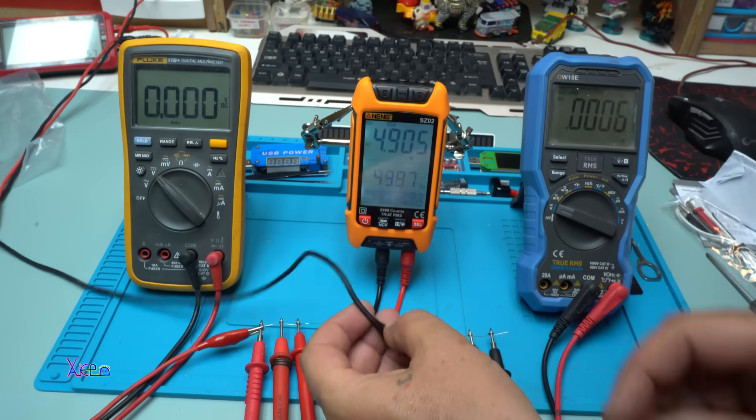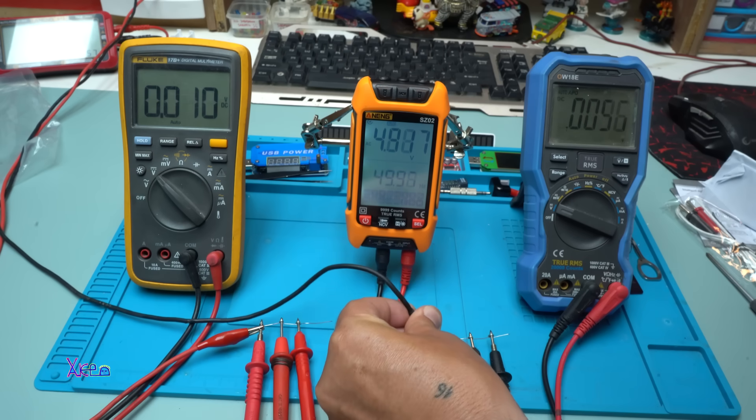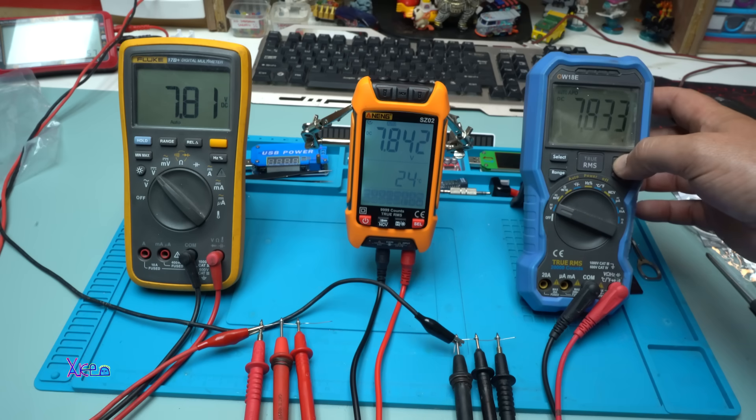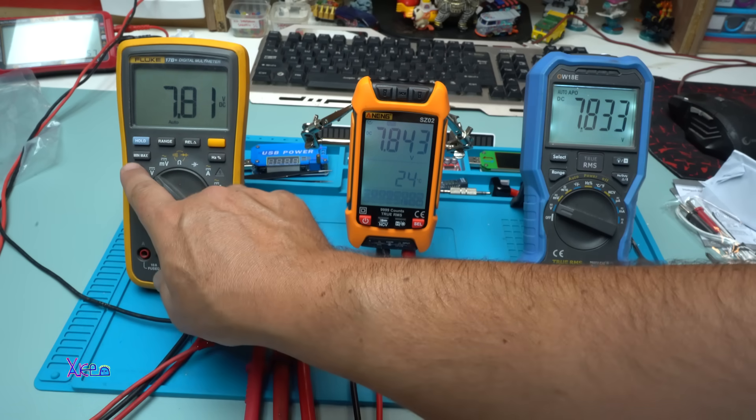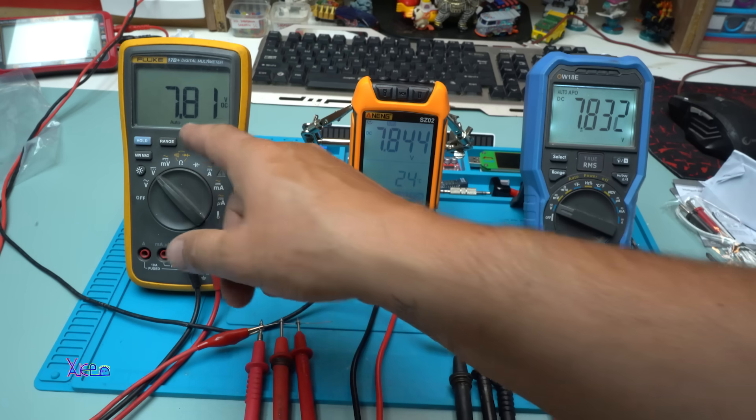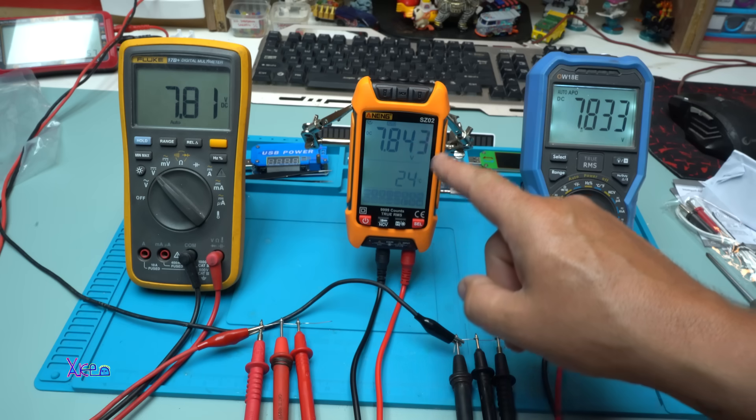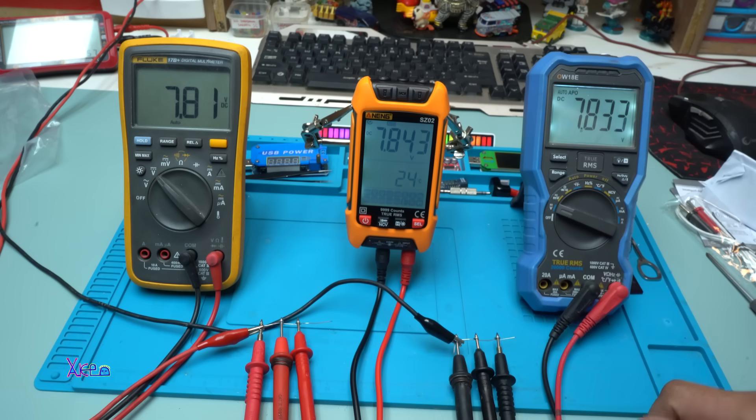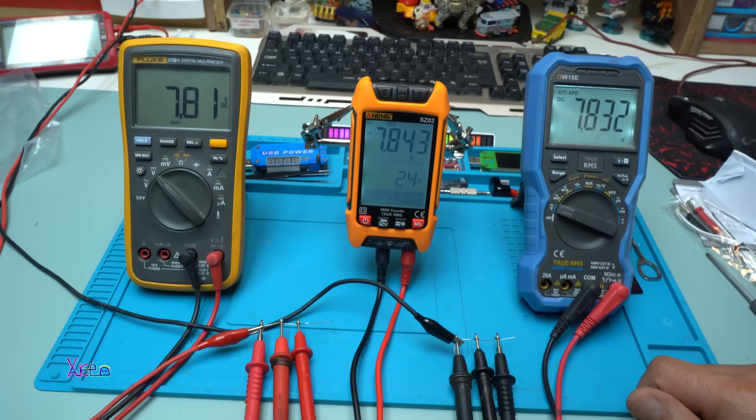And from my power supply, I'm sending 7.8 volts. And you can see on my Fluke, the reading is 7.81. On the new Aneng CZ02, 7.84. And on OW18E multimeter, which this one is pretty good, 7.833 volts.